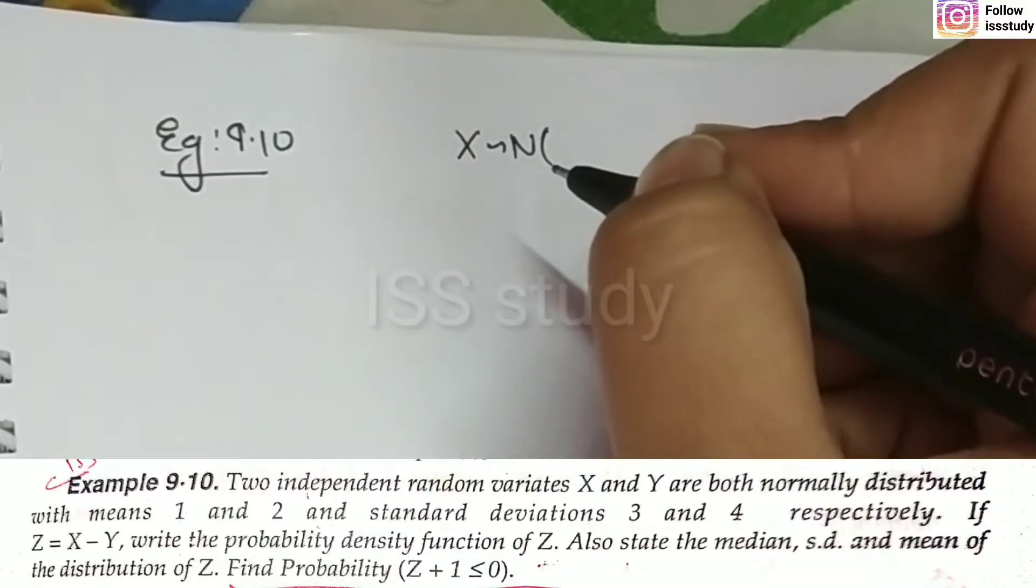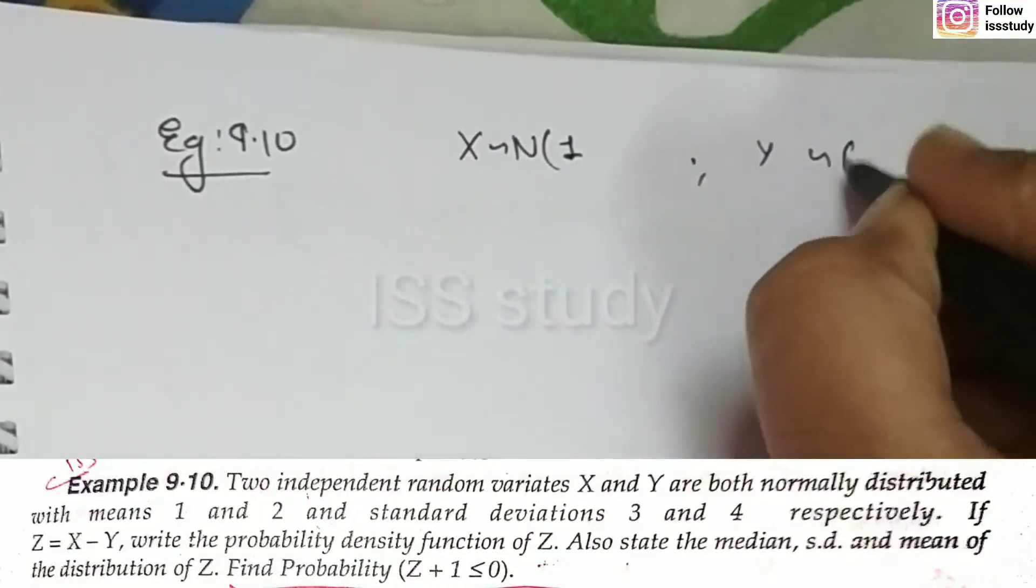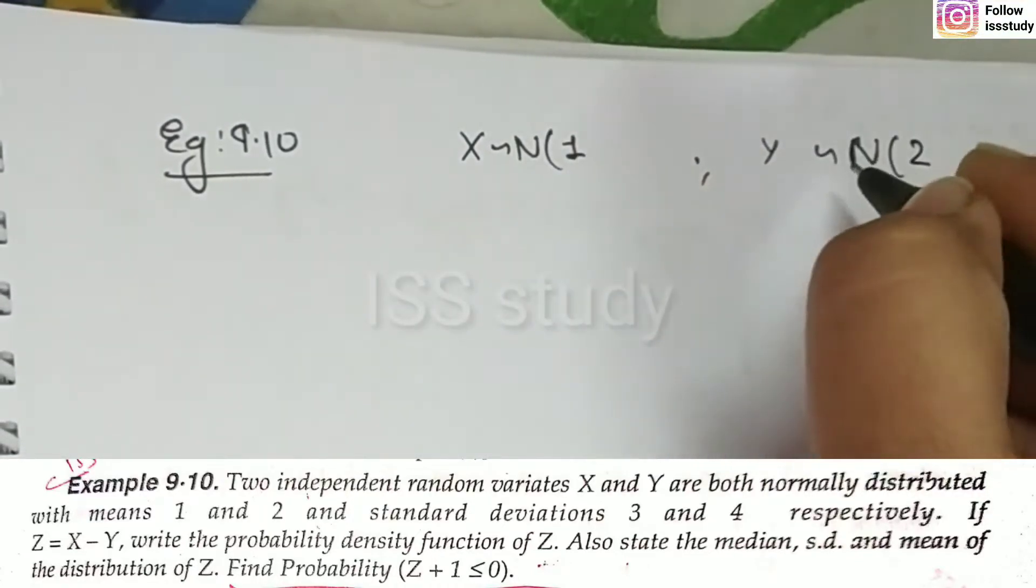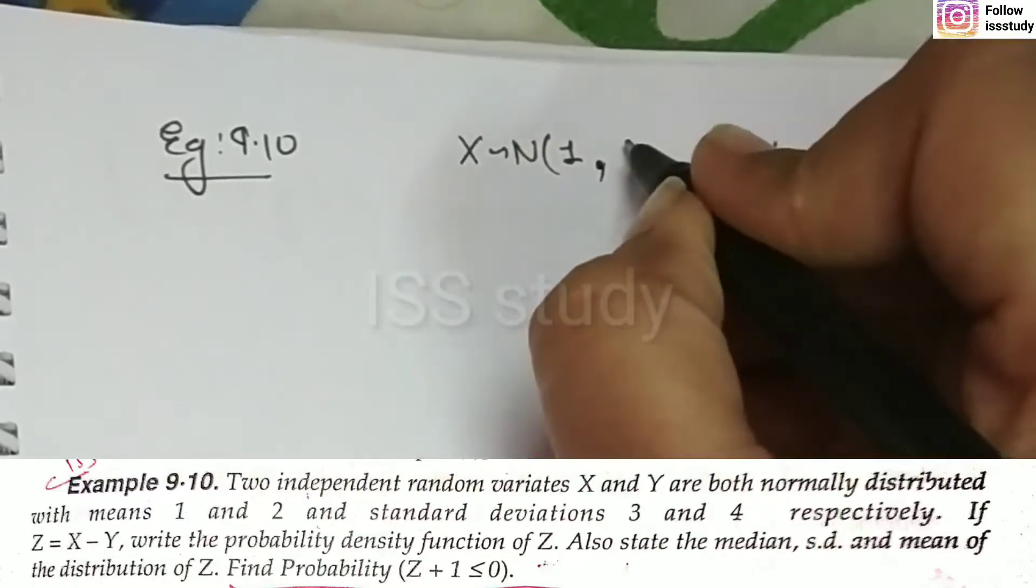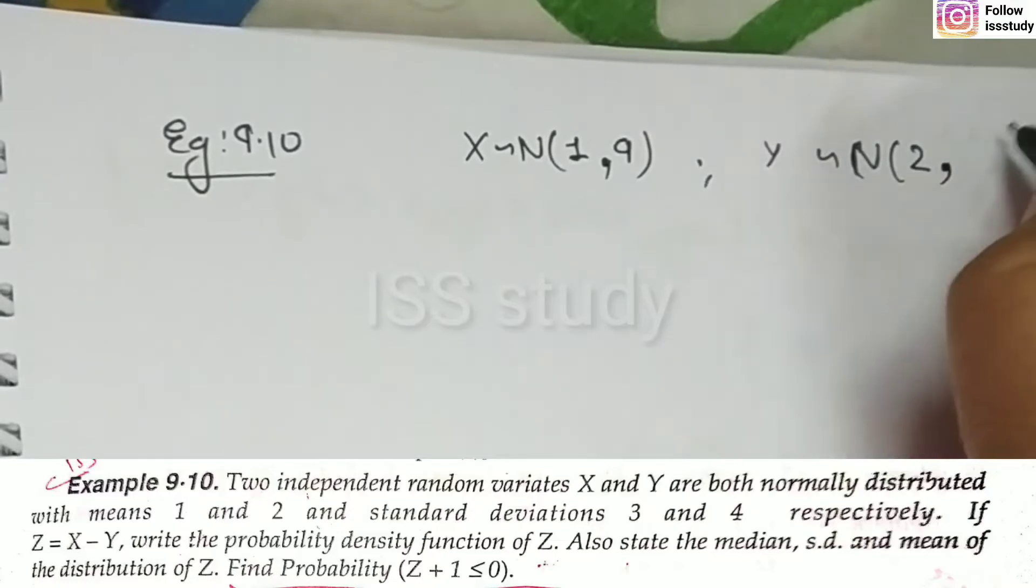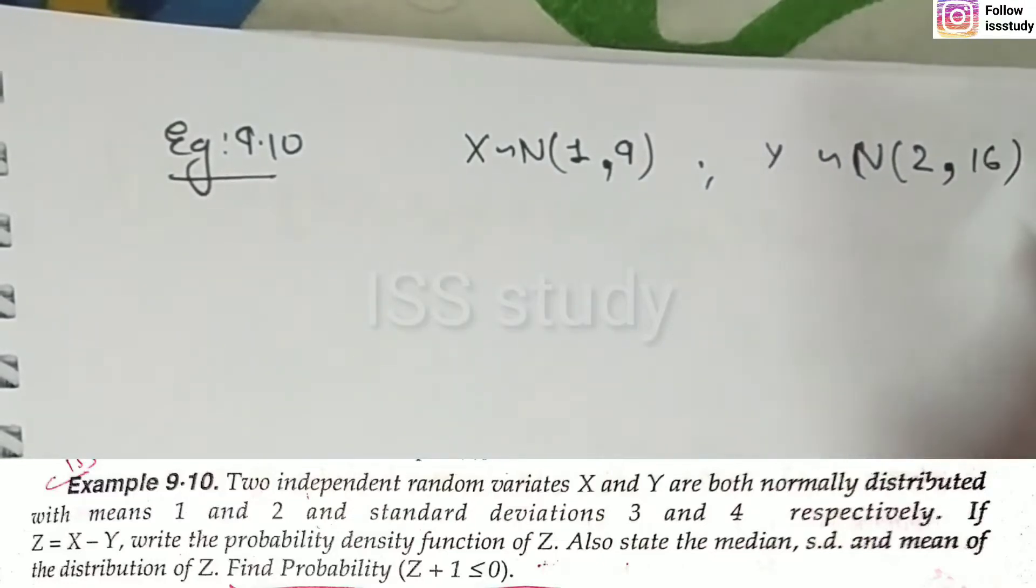So, what do you see? Means 1 and 2 and standard deviation 3 and 4. This means mean is 1 and this means is 2. Then standard deviation 3 and 4. Standard deviation 3 means variance is 9. And 4 means standard deviation is 16 respectively.